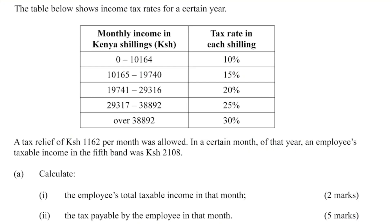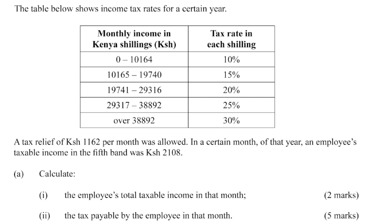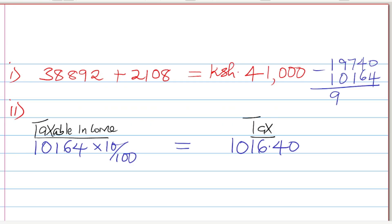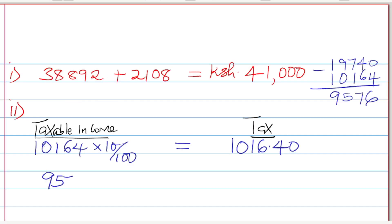The second band begins from 10,165 to 19,740. To get the amount taxed in that band, we take the difference: 19,740 minus 10,164 = 9,576. We tax that at 15%, so 9,576 × 15% = 1,436.40. That is the tax in the second band.